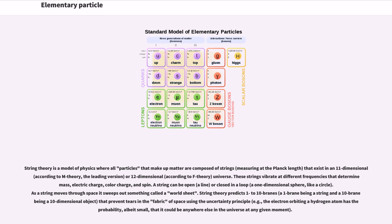A string can be open (a line) or closed in a loop (a one-dimensional sphere, like a circle). As a string moves through space it sweeps out something called a world sheet. String theory predicts 1-10 branes—a 1-brane being a string and a 10-brane being a 10-dimensional object—that prevent tears in the fabric of space using the uncertainty principle. For example, the electron orbiting a hydrogen atom has the probability, albeit small, that it could be anywhere else in the universe at any given moment.